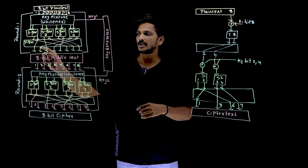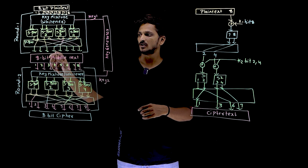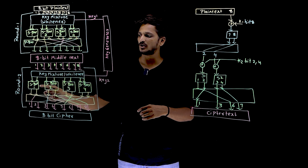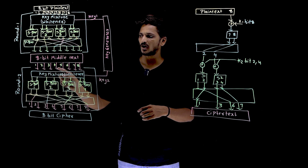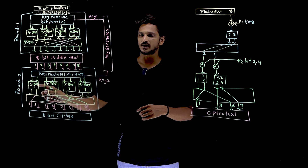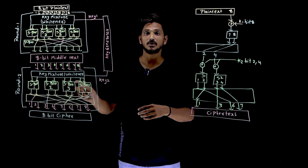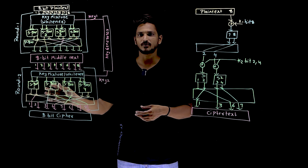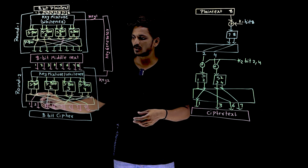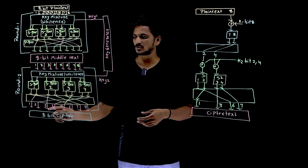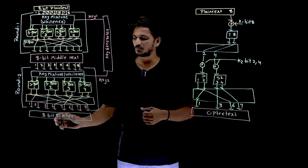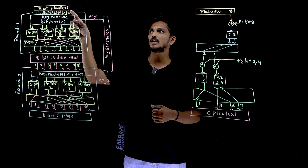The 7th is permuted to the 2nd position and the 8th is permuted to the 4th position. So the 2nd and 4th bits are affected using this 8th bit. Now the 2nd bit goes into S-box 1 after XOR with the key, and the 4th bit goes into S-box 2 after XOR with the key. So the 2nd and 4th bits are affecting 2 S-boxes, meaning it is affecting 4 bits total. The 2nd bit output is permuted to the 1st position, the 1st bit is permuted to the 6th position, the 3rd bit stays in the 3rd position, and the 4th bit is permuted to the 7th position. So the final output 8-bit cipher text bits 1, 3, 6, and 7 are affected using this.